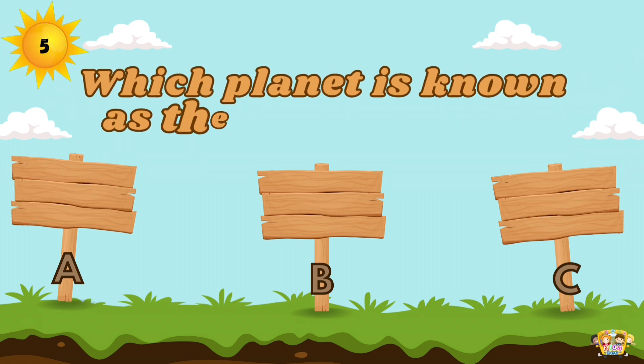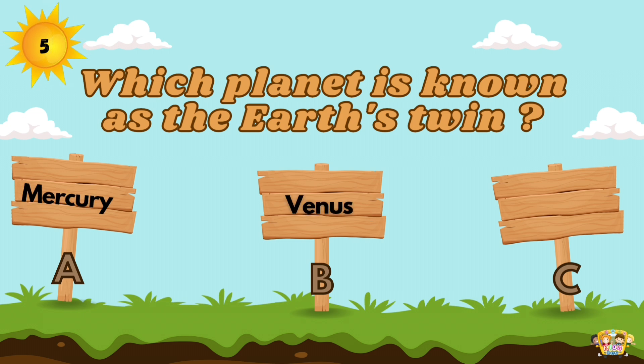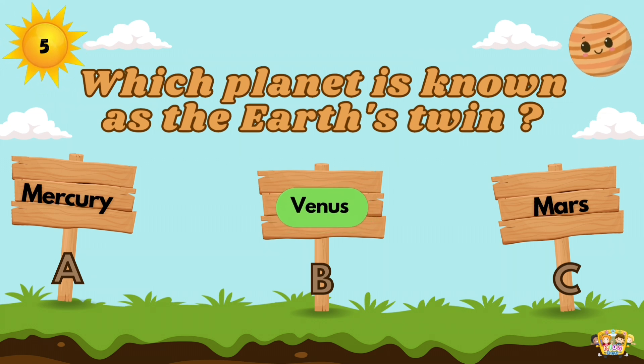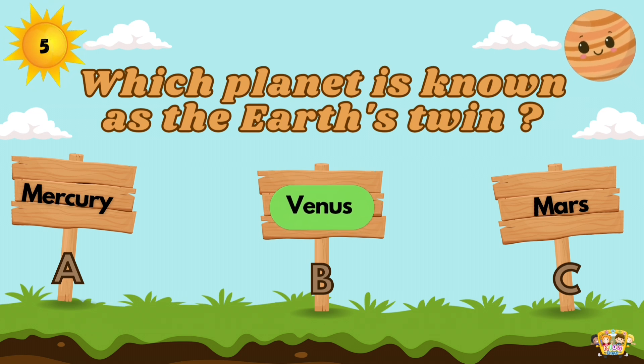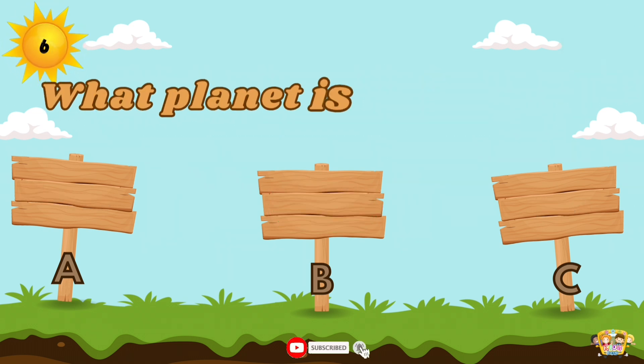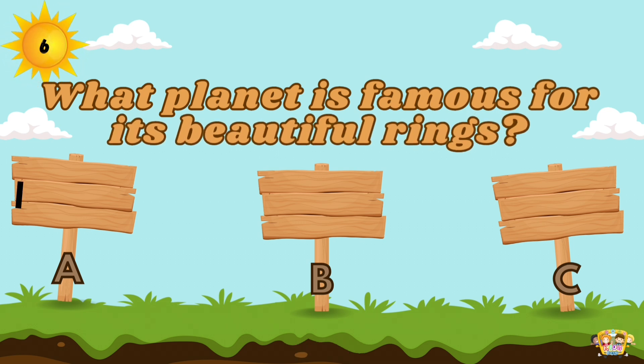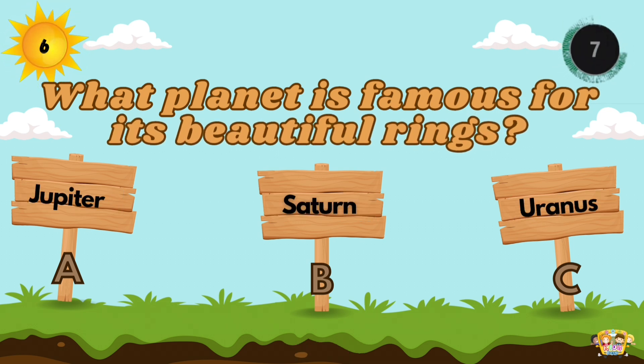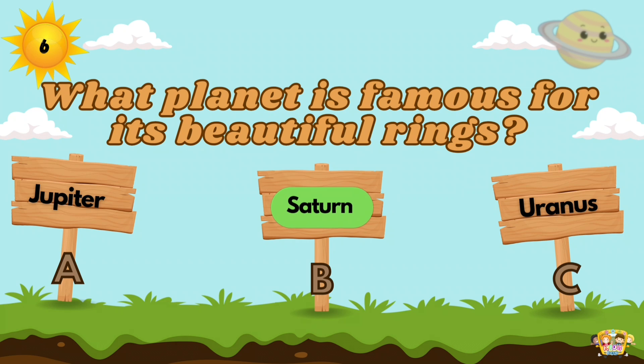Which planet is known as the Earth's twin? Venus is the twin planet of our Earth. What planet is famous for its beautiful rings? Saturn's rings are the most extensive ring system of any planet in the solar system.